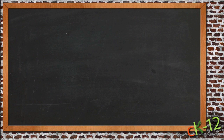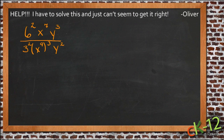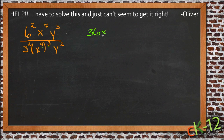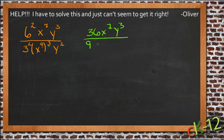Let's look at a specific example sent in by a student. Oliver said he can't get this one right. He starts with 6 squared times x to the 7th times y to the 3rd, over 3 squared times x to the 9th to the 3rd times y squared. The first thing to do is simplify the bottom. Since we have a power raised to a power, we multiply: 6 squared is 36, 3 squared is 9, and 9 times 3 gives x to the 27th. So we have 36 times x to the 7th times y cubed, over 9 times x to the 27th times y squared.